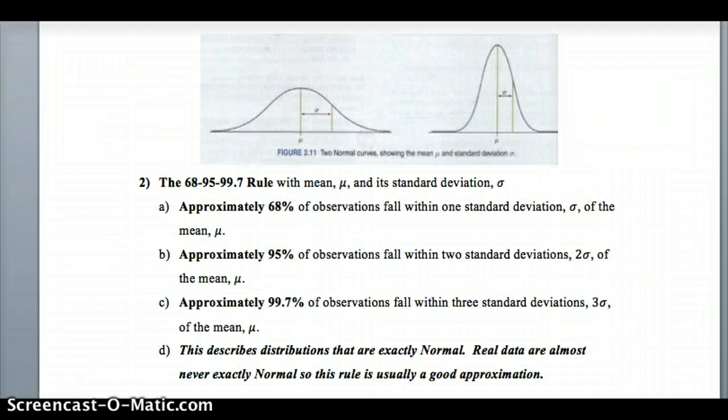Now we can use a rule, the 68-95-99.7 rule, to give us an approximation of how many values lie within a certain interval of the mean. Approximately 68 percent of observations are within one standard deviation of the mean. About 95 percent fall within two standard deviations. And about 99.7 percent fall within three standard deviations - the mean plus or minus three times the standard deviation.